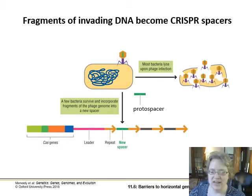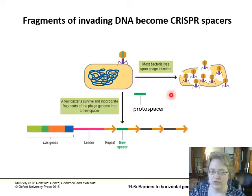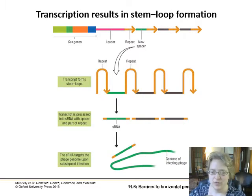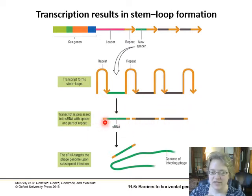If a cell survives a phage infection, we get these little bits of DNA referred to as protospacers. Some bacteria survive and put this little bit of phage genome as a new spacer in their CRISPR sequence — their short palindromic repeats cluster system. This new spacer forms little stem loops, and then those get transcribed out. The repeats are cut out, leaving a little bit of the spacer on the ends, and these small bits of DNA float around in the cell and wait.